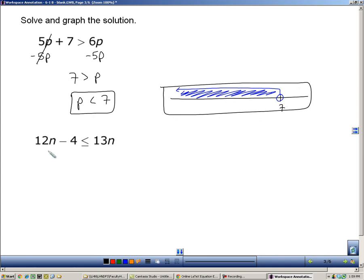Next one down here, again letters on both sides. I like to move the smaller coefficient, so I'm going to subtract 12n. Now, some people might look at this minus here and say, well, why didn't you add the 12n? The answer is because the 12 is positive, and 12 minus 12 is 0, and that's what you want. You want to cancel that off.